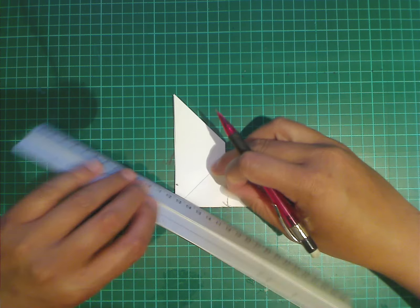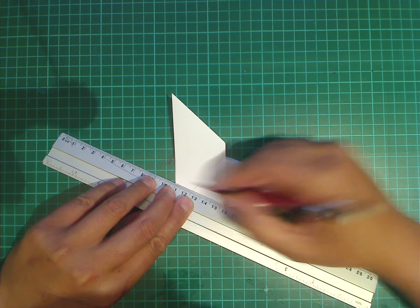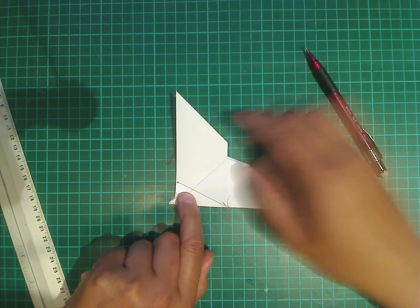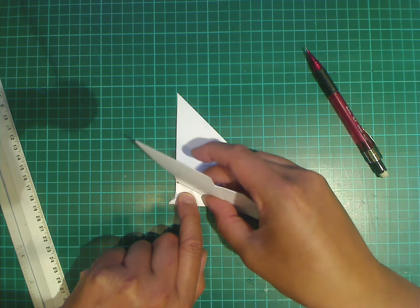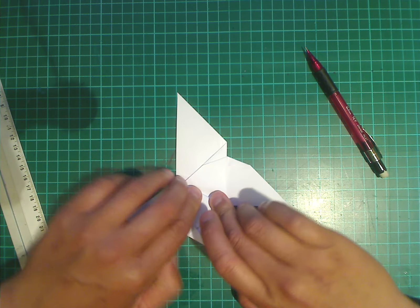I'm going to draw the line so it's clearer. Okay. So we're going to fold along this crease line. And this will create the wing. Like so.